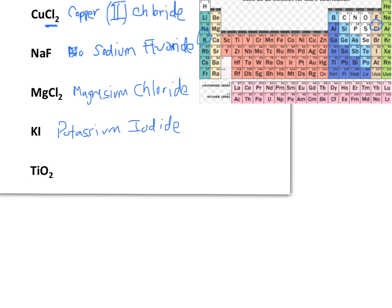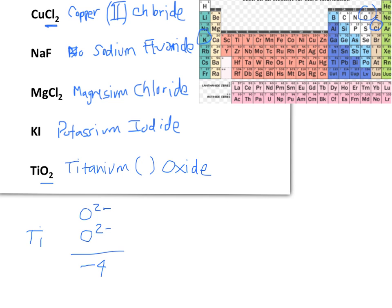For the last example, TiO₂: titanium is a transition element and not one of the exceptions, so we write titanium with parentheses and oxygen becomes oxide. Now we figure out the charge on titanium: oxygen forms a −2 ion and there are two of them, giving a total of −4. With a single titanium, it must carry +4. So we put Roman numeral IV in the parentheses, giving us titanium(IV) oxide.